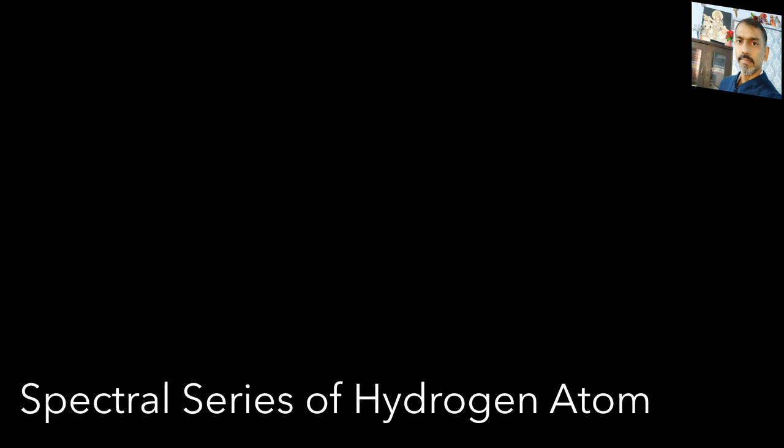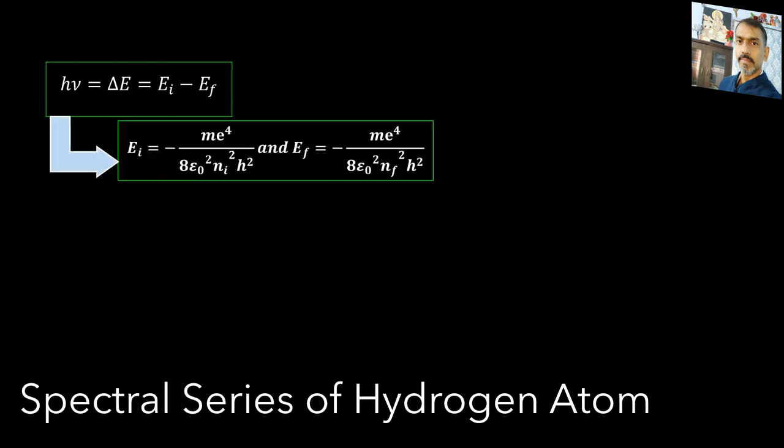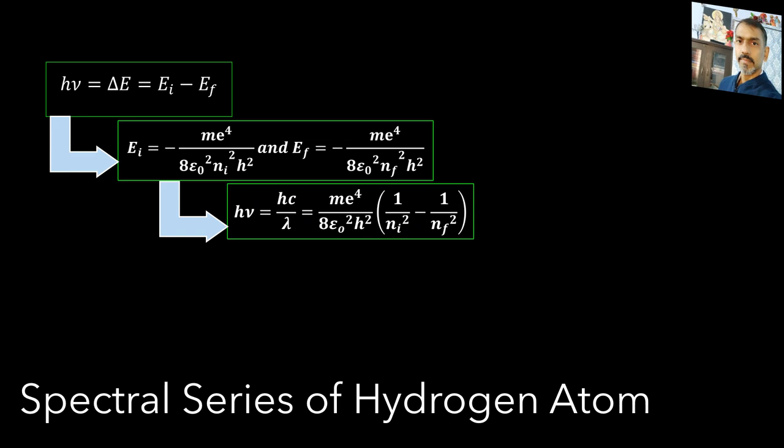According to frequency condition of Bohr's atomic model, when an electron jumps from one stationary orbit of higher energy to another stationary orbit of lower energy, it radiates energy as single photon of energy hν. Hence delta E equals to hν. Therefore hc by λ equal to me to the power 4 by 8 epsilon naught square h square into 1 by ni square minus 1 by nf square. This gives 1 by lambda equal to me to the power 4 by 8 epsilon naught square ch cube into 1 by ni square minus 1 by nf square.